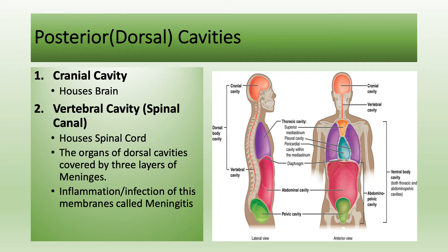We have two cavities in the back. From most superior to inferior — or top to bottom — the cranial cavity, or cranium. Notice I did not say skull but cranium, a part of the skull. The cranium houses the brain, and inferiorly the vertebral column or spinal canal protects and houses the spinal cord. The organs of the posterior cavities — brain and spinal cord — are covered with three layers of membrane called meninges. Inflammation or infection of these membranes is called meningitis.